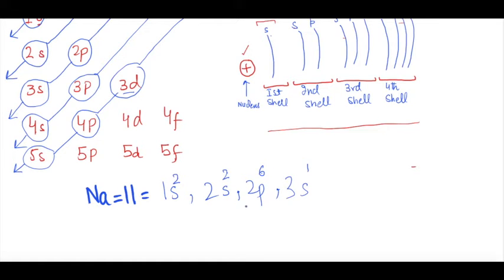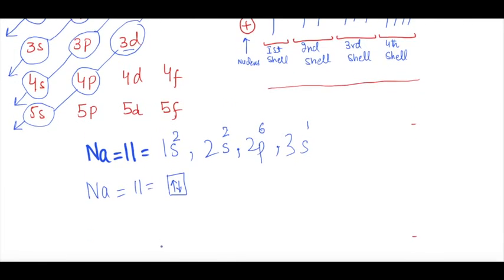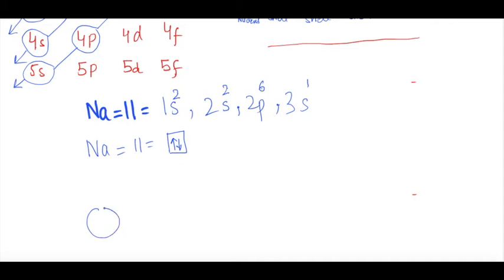Now I will draw the orbitals. S subshell has one orbital, so there is only one box for the S orbital, holding two electrons. Each arrow represents one electron — one arrow points up and the other points downward. The reason is that in an orbital, electrons spin: one clockwise and one anticlockwise.